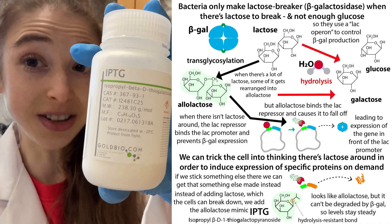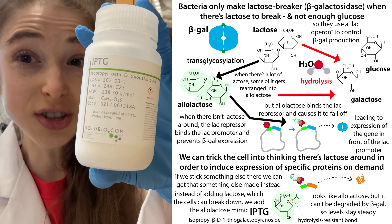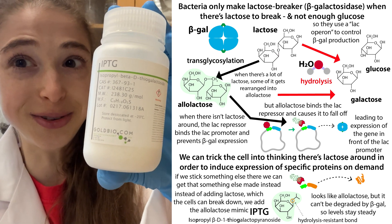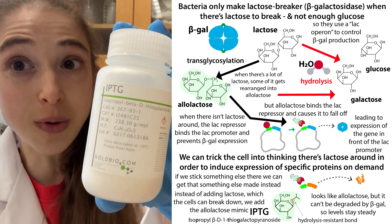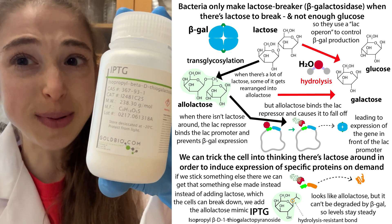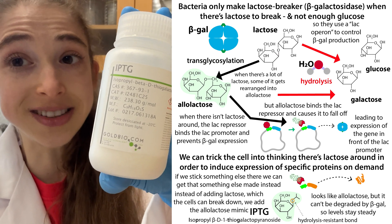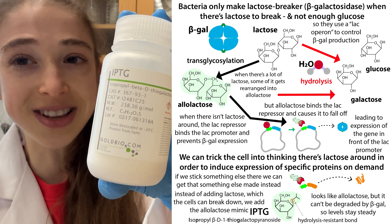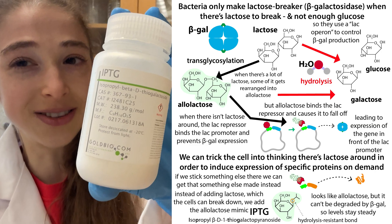IPTG is an L-lactose mimic or analog, and we use it to trick bacteria into thinking there's lactose around so we can trick them into doing things like making protein for us. The reason why we use IPTG instead of actually using lactose is because the bacteria can't eat it. They can't break it down, so it stays around, and the bacteria keep thinking there's lactose around, so more of our protein will hopefully be made.